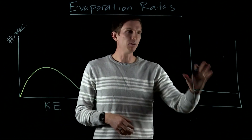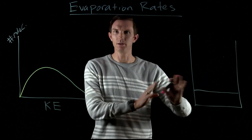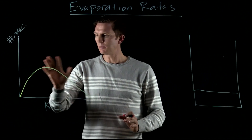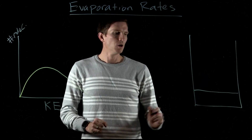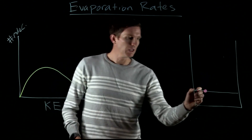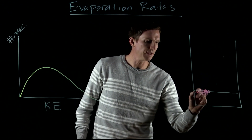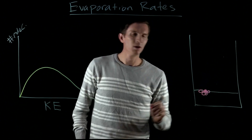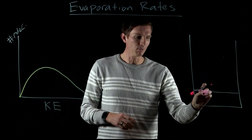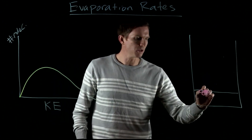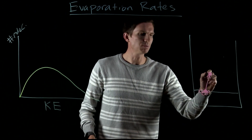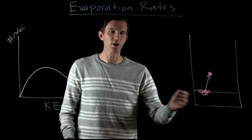Let's say we have a container — a beaker — that includes some liquid in it. That liquid is at a specific temperature, meaning it has some distribution of its kinetic energies. If I have a molecule sitting on the surface, what would prevent it from leaving? It would be all the attractions between that molecule and the other molecules around it — the intermolecular force attractions. In order for that molecule to evaporate and become a gas, it has to break those attractions.